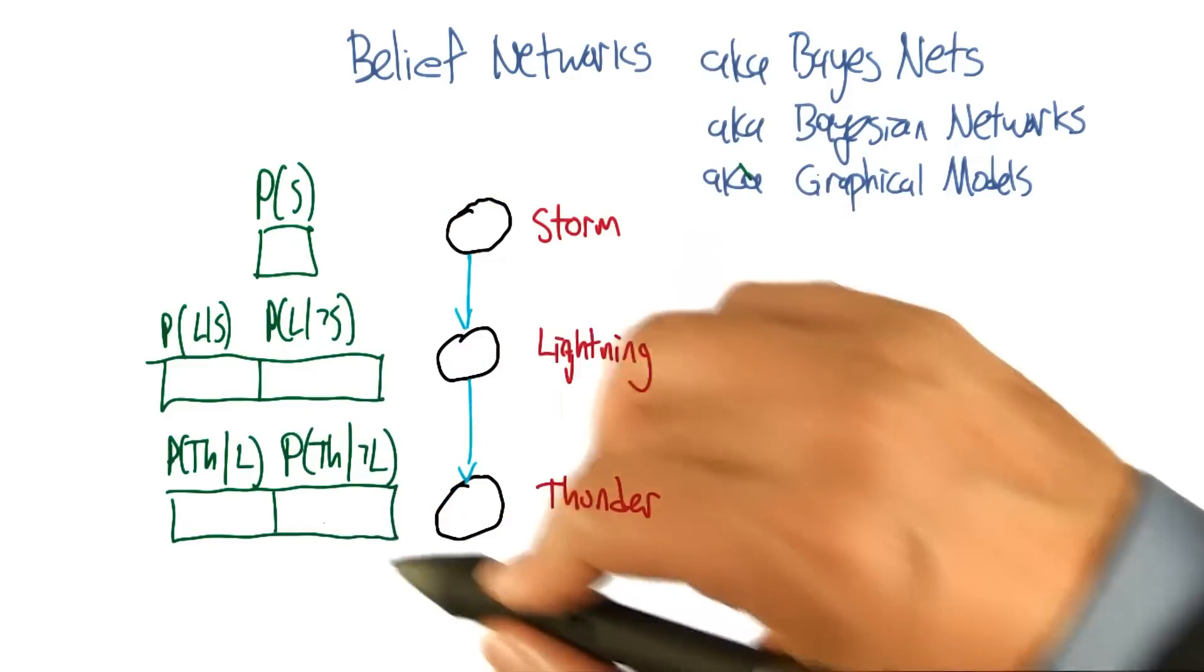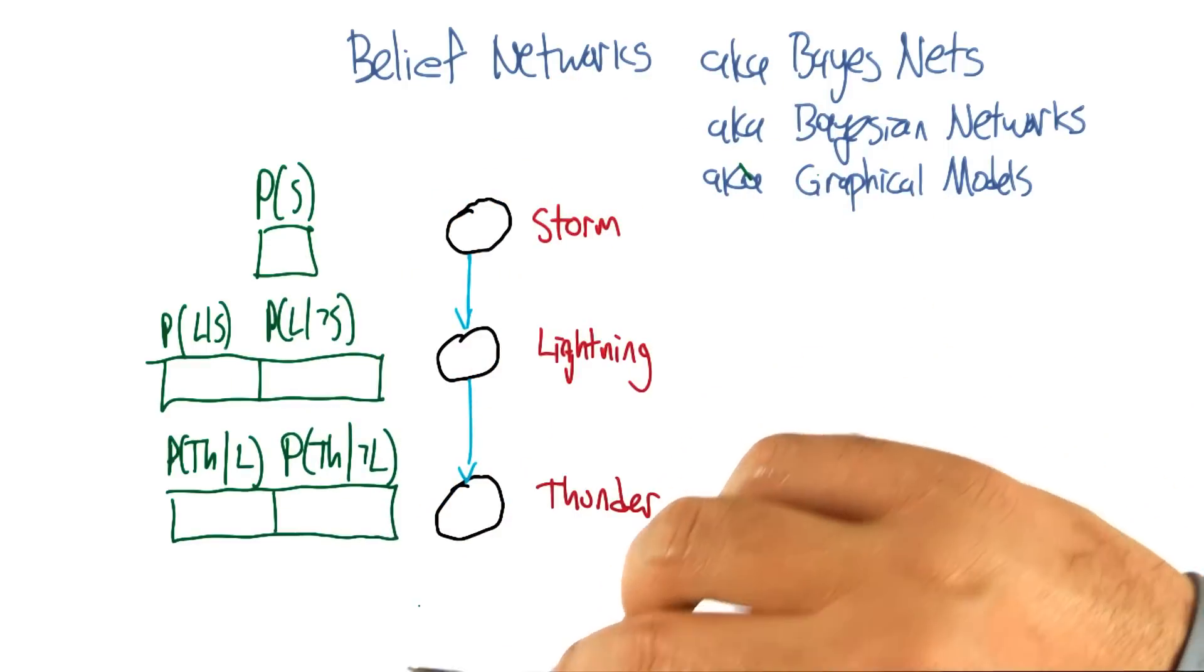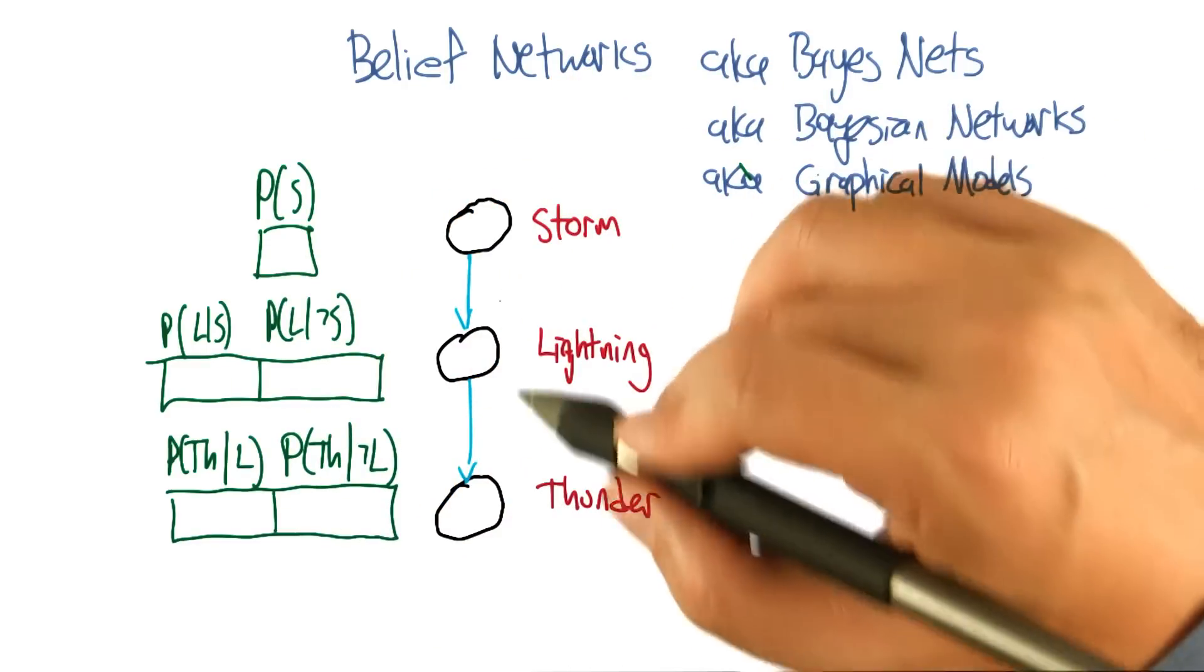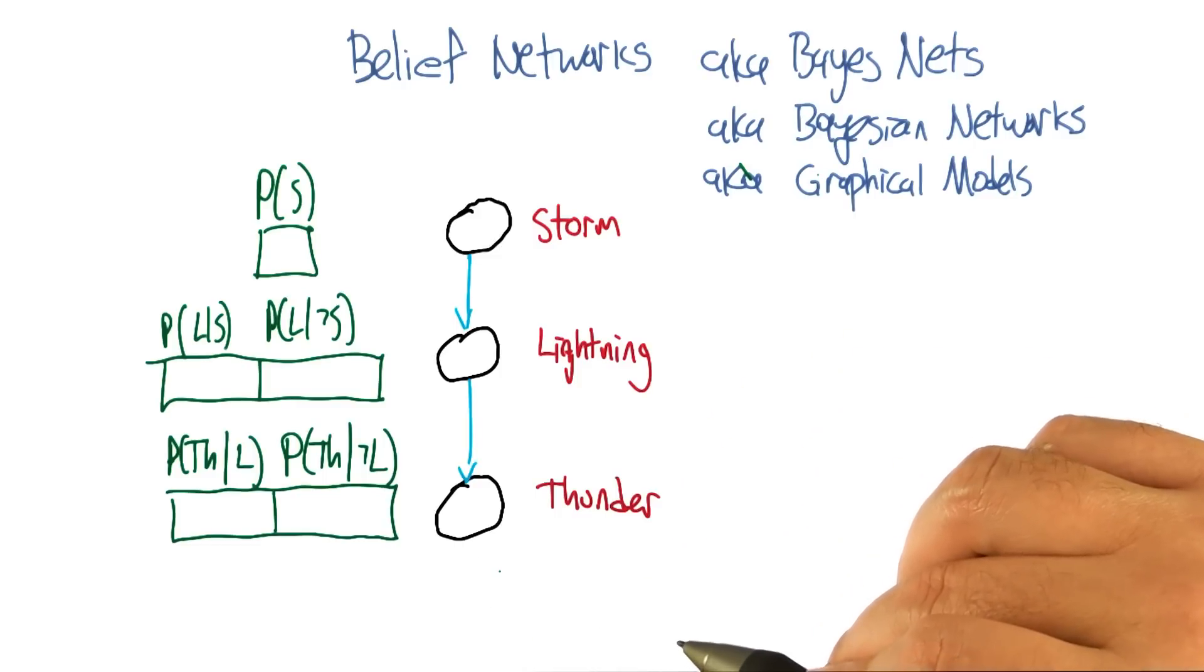And once we have these, in this case five numbers, that's enough to work out any probability we want in the joint just by multiplying corresponding components together.